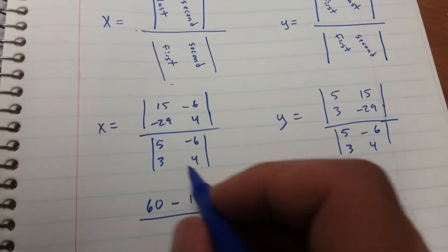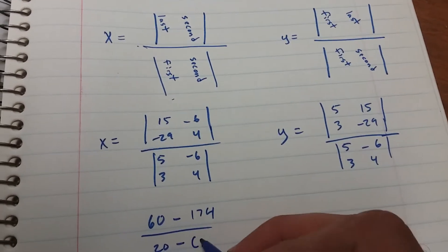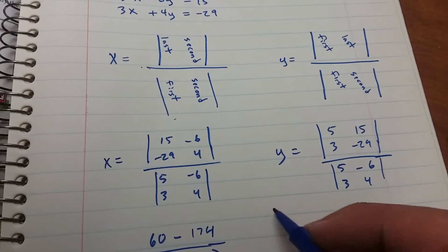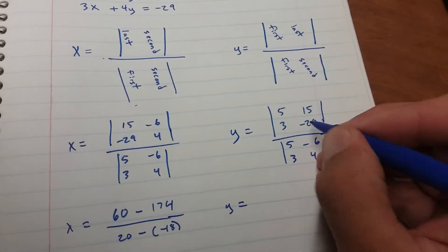Okay, and that's all over, 5 times 4 is 20, minus negative 18.